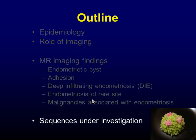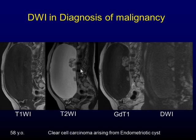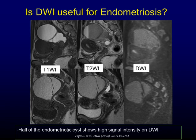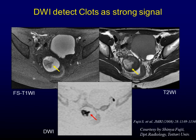Now let's move on to recent techniques. Diffusion-weighted imaging is now widely accepted in body regions and used for differentiating from malignancies. This case is a clear cell carcinoma arising from endometriosis. Mural nodules are enhanced and show high signal intensity on diffusion-weighted image, suggesting malignancy. Regarding endometriotic cysts, they can be diagnosed by conventional sequences. On diffusion-weighted image, half of endometriotic cysts show high signal intensity, making it difficult to say that DWI provides additional information. One important note is that a clot in endometriotic cysts sometimes shows strong signal intensity on diffusion-weighted image, and this should not be mistaken for a malignant region.